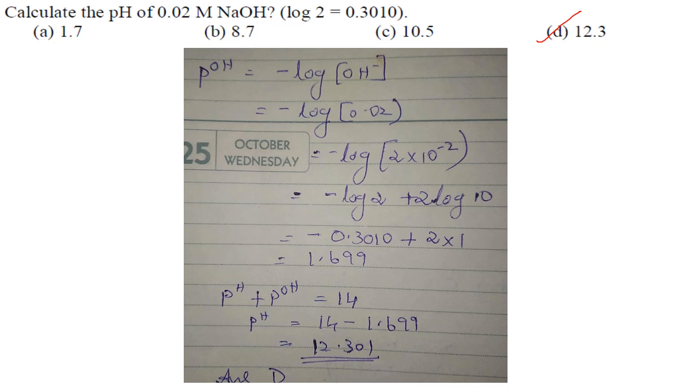Calculate the pH of 0.02 molar NaOH: NaOH is basic and gives one hydroxide ion, so [OH-] = 0.02 M. pOH = -log(0.02) = 1.699. Since pH + pOH = 14, pH = 14 - 1.699 = 12.301. Answer is option D, 12.3.